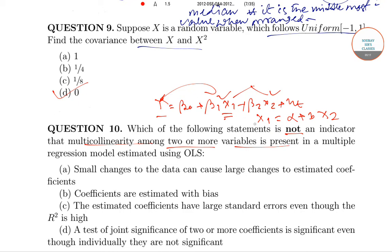Now, which is not an indicator? First, small changes in data can cause large changes in estimated coefficients - which is true. The coefficients are estimated with bias - no, this is not true because in the case of multicollinearity, the coefficients are not biased, they are unbiased.